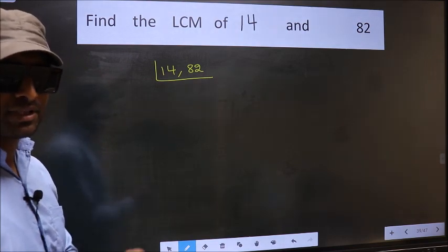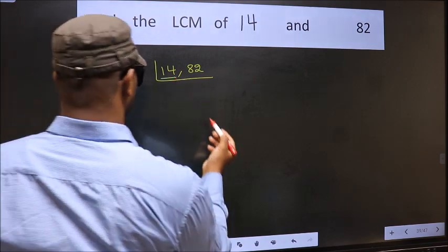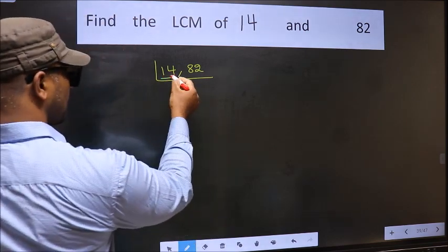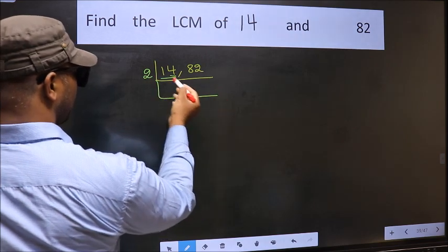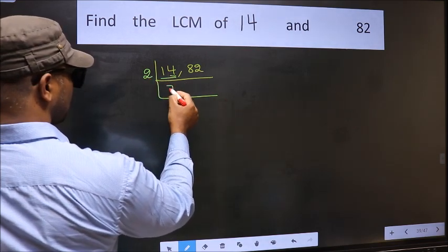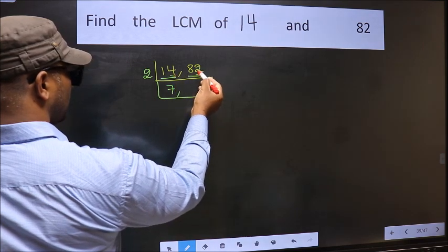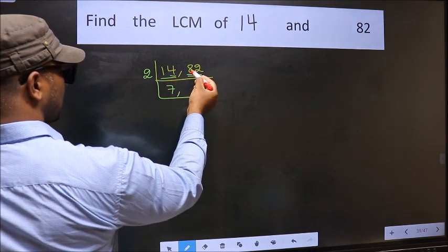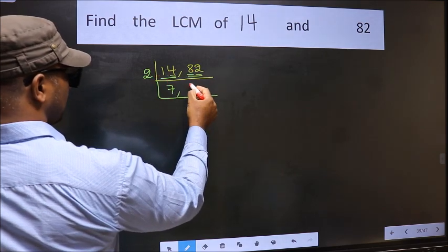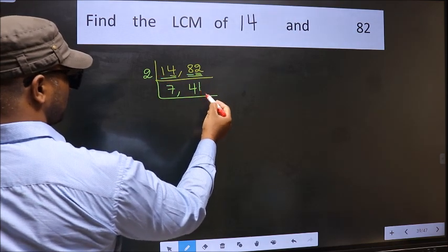Now you should focus on the first number which is 14 here. For this number last digit 4 is even, so take 2. When do we get 14 in 2 table? 2 7s 14. The other number 82, last digit 2 is even, so this is divisible by 2. First number 8. When do we get 8 in 2 table? 2 4s 8. The other number 2. When do we get 2 in 2 table? 2 1s 2.